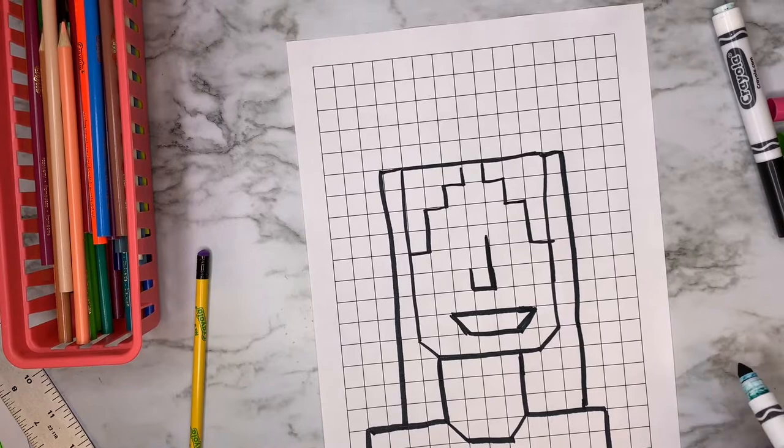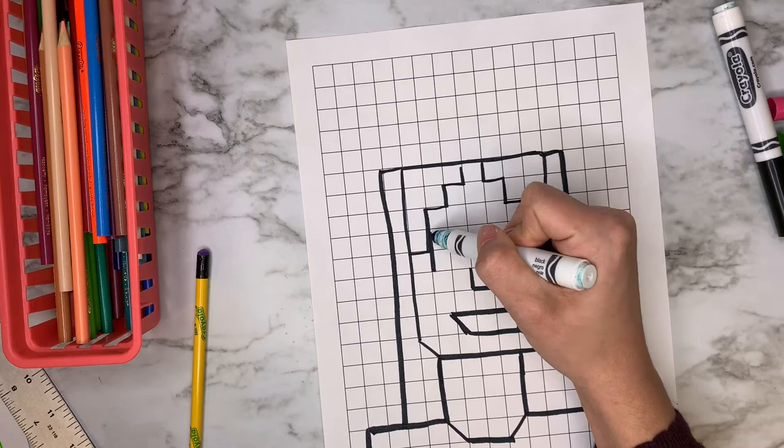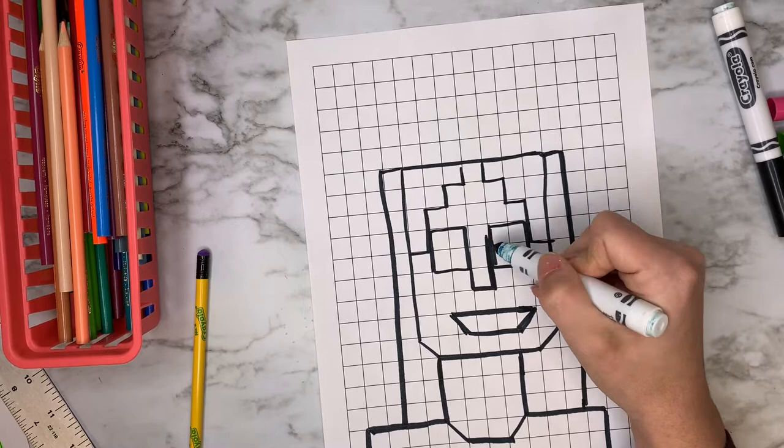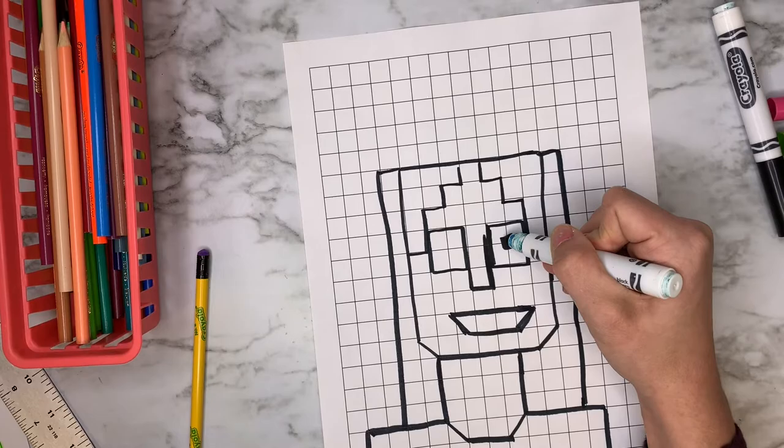Next, I'm going to add my eyes, which are also square. And I have big eyes. So there's that one. And right in the center of your square, you can go ahead and add even smaller square.